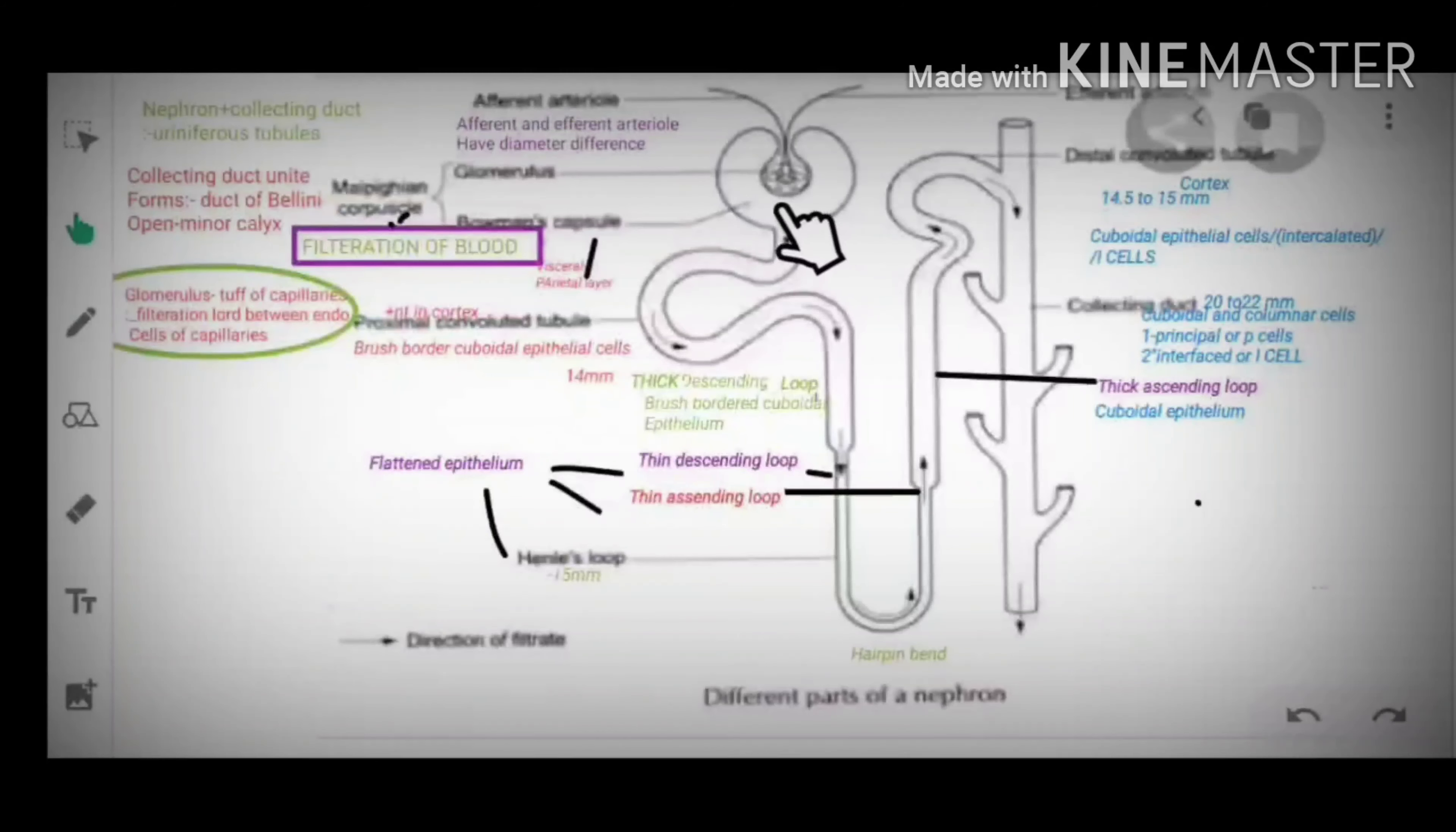This is a very important point. Bowman's capsule consists of two layers. One is visceral which is present in the inner side of the Bowman's capsule and parietal layer.